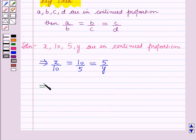This implies x over 10 is equal to 10 over 5 and 10 over 5 is equal to 5 over y.